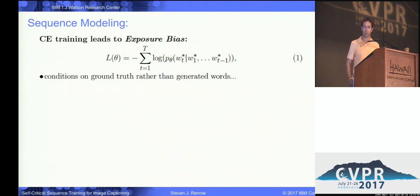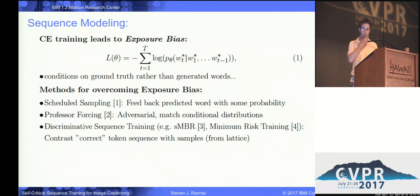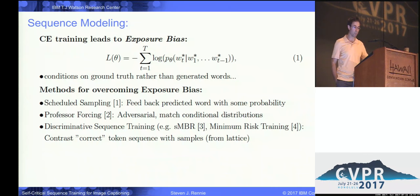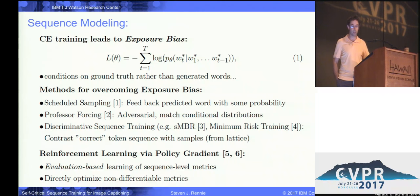For sequence modeling, standard training methods lead to a phenomenon that Ranzato characterized as exposure bias. Essentially, we condition on ground truth rather than generated words, and this causes a mismatch at test time. Several methods have been proposed for compensating for exposure bias, including scheduled sampling, professor forcing, and discriminative sequence training. Here, we're going to focus on solving the issue with reinforcement learning, specifically with policy gradient.